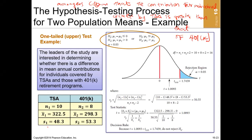Because the question gave sample standard deviation, it means we are going to use the t-test. When computing your t, there is a formula, but let's first look at the critical t to determine the bound. We will need two things: the degree of freedom, which is n1 plus n2 minus 2.